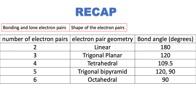Let's recap the VSEPR model. It tells the electron pair shapes, or geometries, around a central atom. Those electron pairs can be bonding or lone pairs. You can refer to an earlier video on Lewis structures for drawing molecules for a review of bonding and lone pairs.